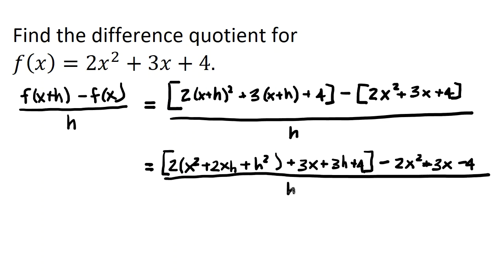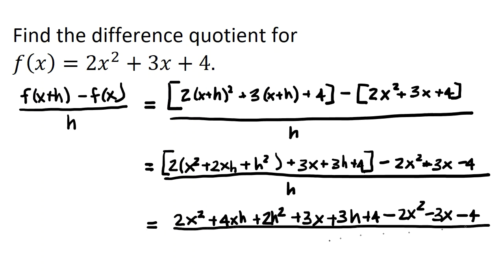Now all of that's still just my f(x+h). And now I'm going to go ahead and just distribute this negative sign. So it's minus 2x² minus 3x minus 4 all over h. Now I can't just drop the h if I feel like doing it.